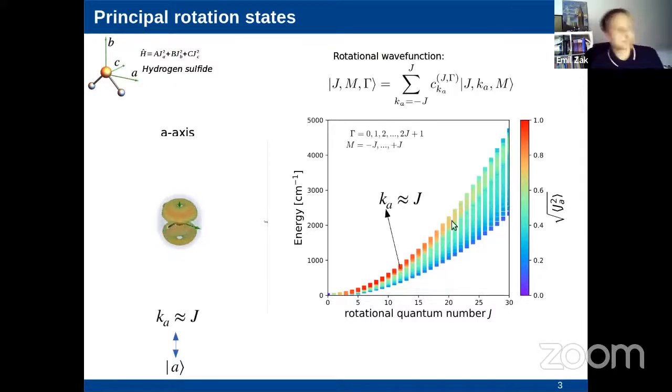Such asymmetric top states can be expanded in the basis of symmetric top wave functions. For each J, there are 2J plus 1 distinct energy levels, and they are enumerated with gamma. Each of these levels have usually different properties in the molecular frame. One such property is the expectation value of the components of the molecular frame angular momentum. If we pick the highest possible energy level for each given value of J, marked here with red, the molecular frame angular momentum is almost perfectly aligned with the A axis.